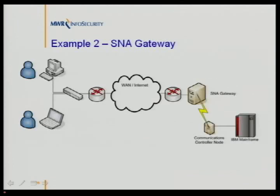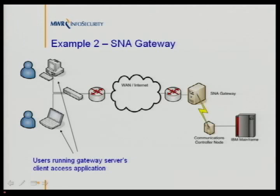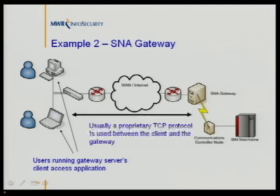Once IP came along, people wanted to run SNA across their IP networks and had to come up with novel ideas. One of the first was an SNA gateway — a device capable of translating IP traffic into SNA. Users run a client application on their PC which communicates with the SNA gateway, usually via a proprietary TCP protocol. The most common example is Microsoft's SNA Server, now known as Host Integration Server. Out of the box, Microsoft's SNA gateway has features where you can pull off the configuration without providing any authentication — and if you compromise it, there are various ways to start attacking the mainframe.